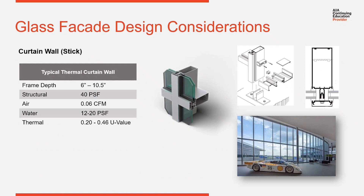Glass design considerations — let's look at some of the drivers of what system you'd select. Looking at the picture here, a very tall curtain wall with wide spacing is subjected to a lot of wind load and dead load, so it needed to be a bigger, more monumental type system. Because of the large elevation and tall spans, this had to be a stick system with a tubular mullion. You can see a tubular curtain wall mullion here.